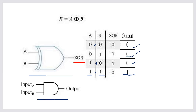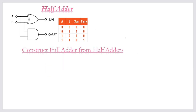We can construct a half adder using a combination of an XOR gate and an AND gate. In the half adder diagram, the summation is represented by the XOR gate and the carry bit is represented by the AND gate, both taking the same inputs A and B. This is the truth table showing the summation and the carry.